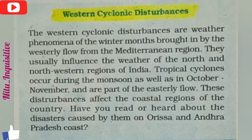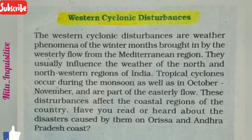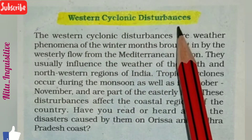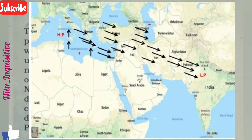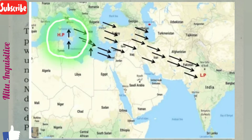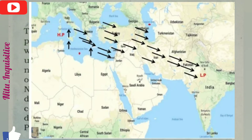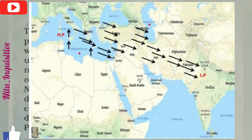The simplest definition of Western Cyclonic Disturbance with a proper diagram: Western disturbances are the low pressure weather phenomena of the winter months which originate in western Asia and the region near the Mediterranean Sea. These winds travel eastward across Iran, Iraq, Afghanistan, and Pakistan, and then reach India during the winter season.